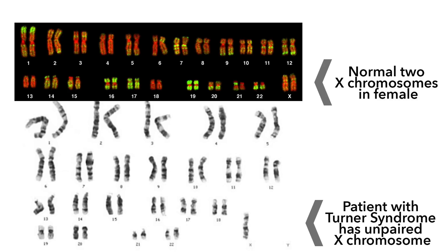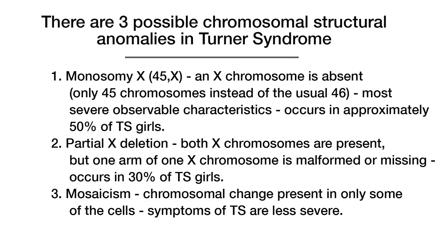Second is partial X deletion, where both X chromosomes are present but one arm of one chromosome is malformed or missing, and this occurs in 30% of TS girls. Third, mosaicism is the chromosomal change present in only some of the cells, and the symptoms of TS are less severe.